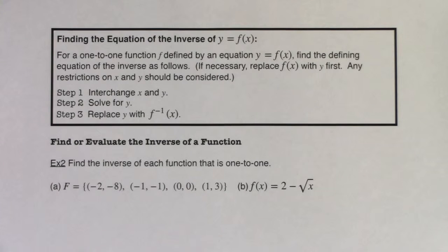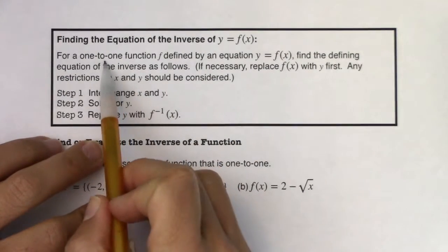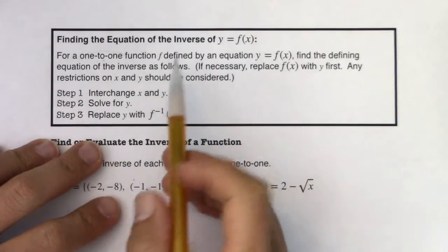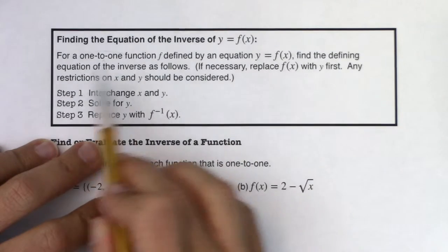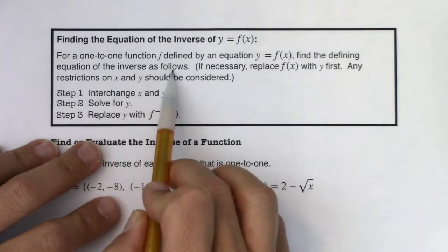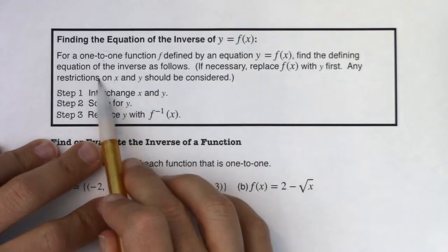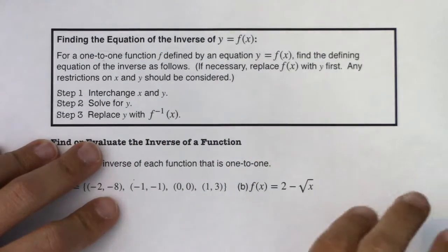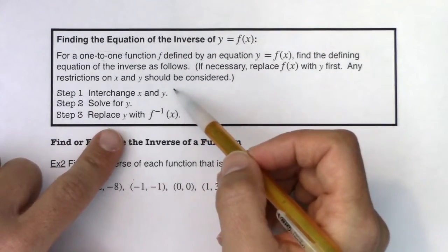Hey, Math 31. Let's make sure we know how to find the equation of the inverse function of f of x. For a one-to-one function — and this is very important — these functions have to be one-to-one or there is no inverse. For a one-to-one function f defined by an equation y equals f of x, find the defining equation of the inverse as follows. If necessary, replace f of x with y first. Any restrictions on x and y should be considered, and we'll talk about the domain and range aspect of things. So here are your three steps.